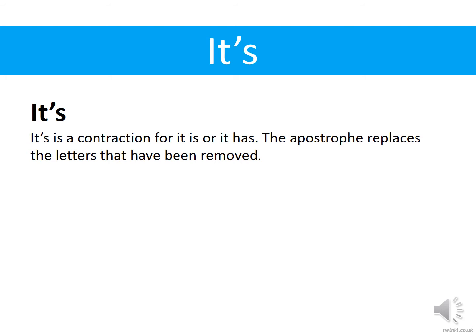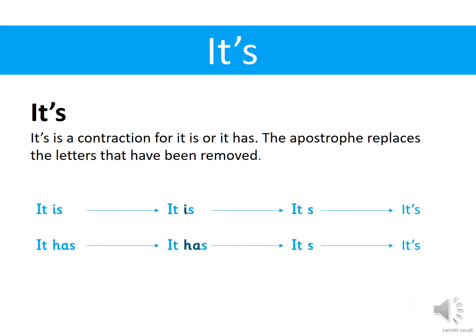It's is a contraction for 'it is' or 'it has'. The apostrophe replaces the letters that have been removed. So 'it has' can be shortened to 'it's', replacing the 'ha' with the apostrophe. Another example: 'it is' can be shortened with the small 'i' being taken out and the apostrophe replacing the second 'i', so it becomes 'it's'.